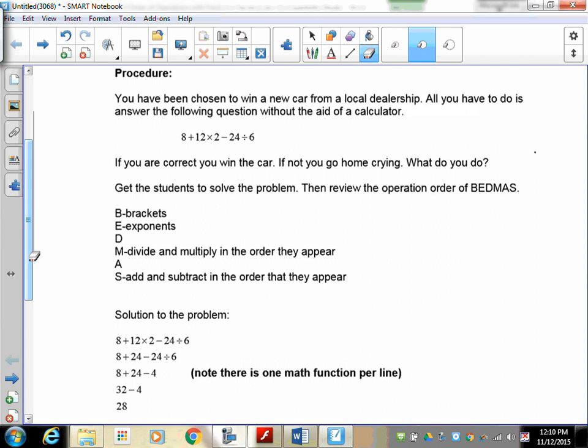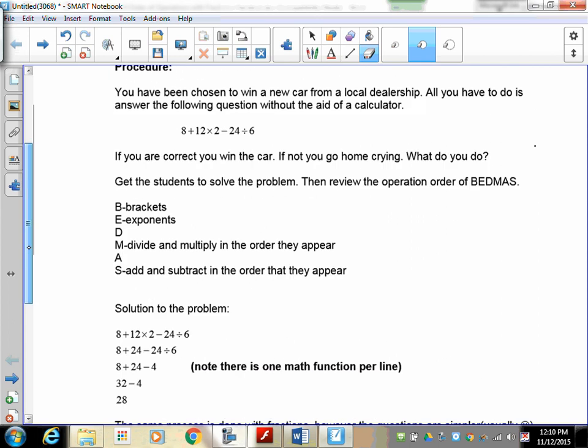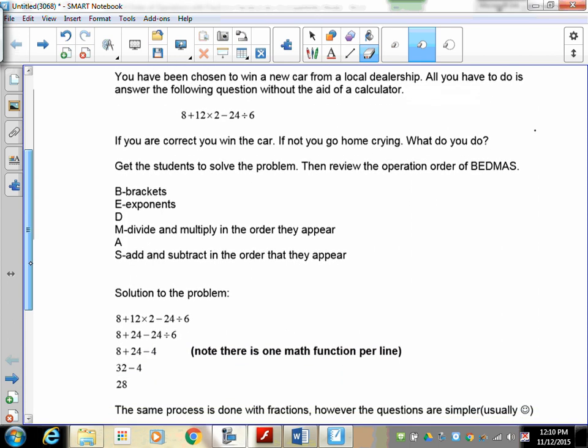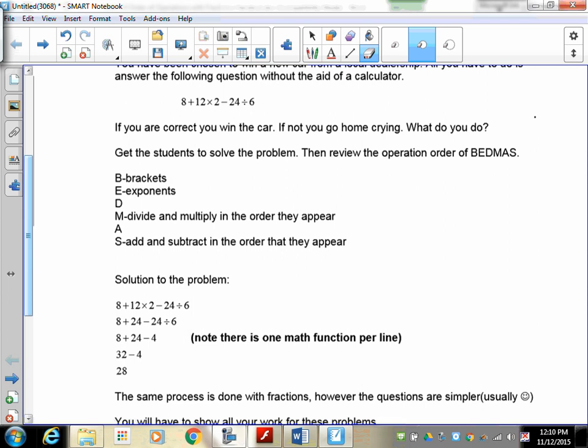If you're correct, you win the car. If you are not correct, you go home crying. So how do we do this? Well, we have to go back and talk about BEDMAS again. Brackets, exponents, B and E. D and M are a group: you divide and multiply in the order they appear. Divide does not come first unless it's first in order. Add and subtract is in order if they appear. So adding is not first only if it appears first.